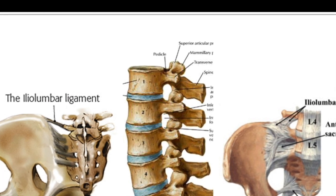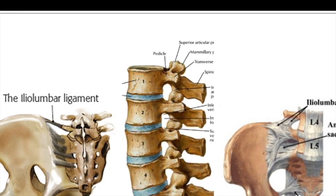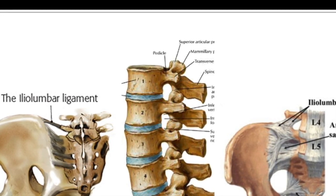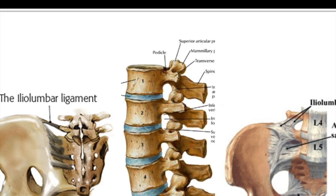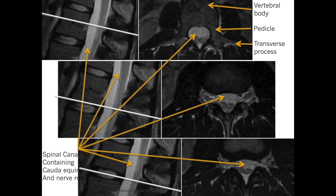This means that the L2 nerve root exits approximately at the mid-body of L2 and not at the level of the L2-L3 disc. At the middle slices, at the level of the lower end plate, the nerve root is already just outside the exit foramen, and a central disc herniation at this level is unlikely to cause nerve root impingement. However, a lateral or far lateral disc herniation at this level could still impinge this nerve root.